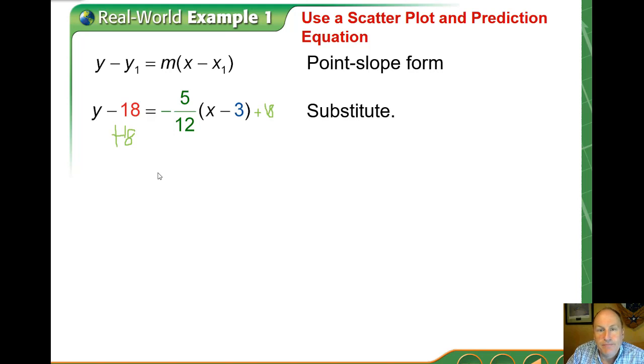Next we're going to add 18 to both sides using the addition property of equality so we can isolate that y. That leaves us with y equals negative 5 over 12 times quantity x minus 3 plus 18.